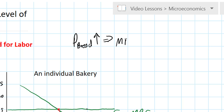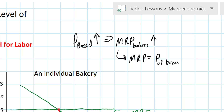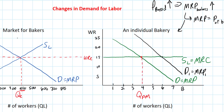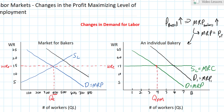This causes the marginal revenue product of bakers to increase, because marginal revenue product equals the price of the good being produced — in this case, the price of bread — times the marginal product of labor, or the productivity of the bakers themselves. So due to an increase in the price of bread, each individual bakery's demand for labor increases. We'll see the demand curve shift out to D1 and MRP1. And since the total demand for labor is basically the sum of all the individual firms' demands, the market demand for labor likewise increases to D1 equals MRP1.